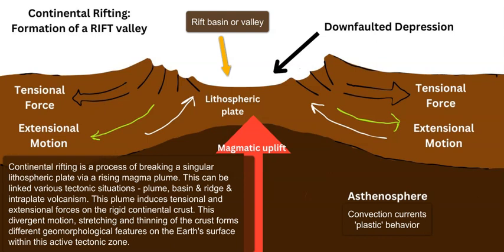The two features we're focused on — the graben and the horst — are linked with rift valley formation and how the lithospheric plate is going to fracture and fault and move according to the stresses and energy placed upon it during this rift valley formation.